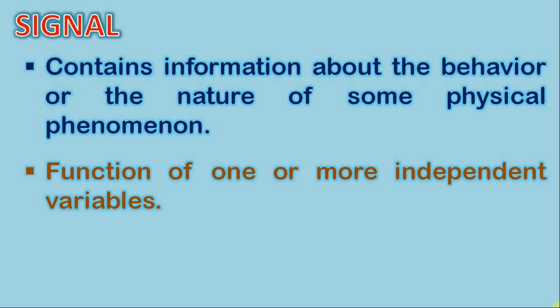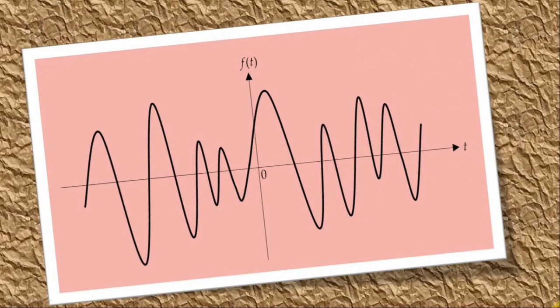When a signal is a function of a single variable, it is said to be a one-dimensional signal. A speech signal is an example of a one-dimensional signal as its amplitude varies with time depending upon the spoken words by a person.